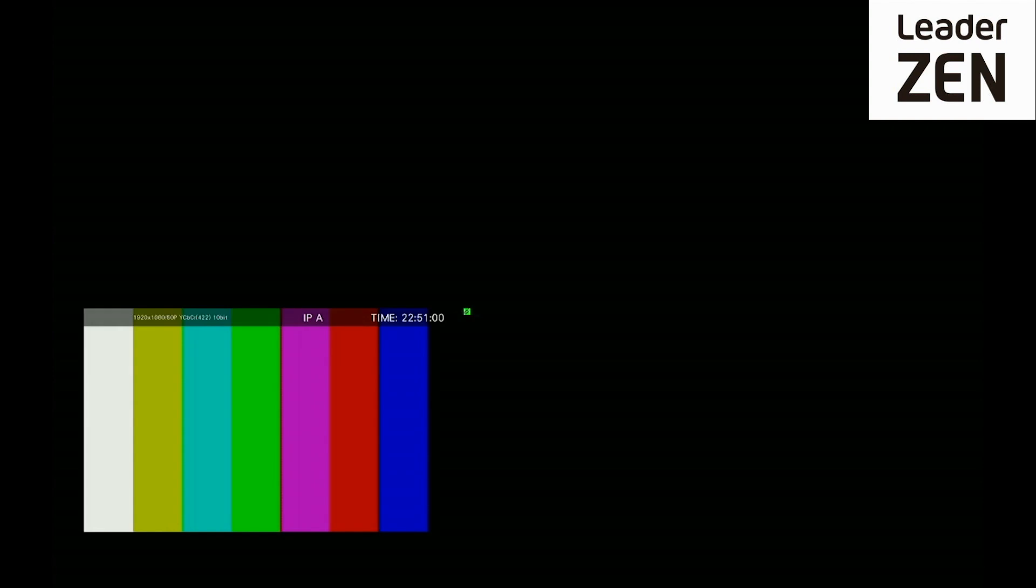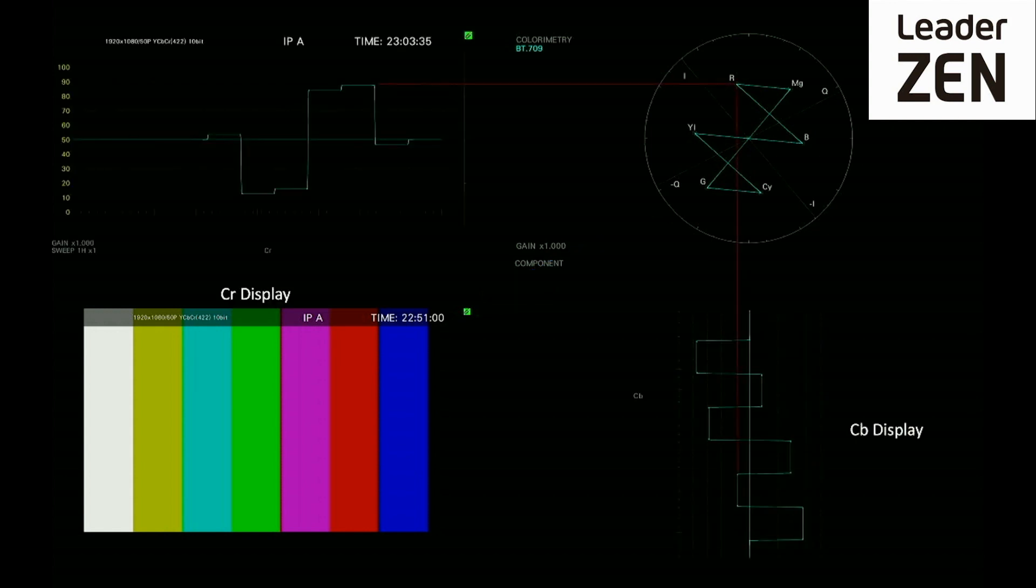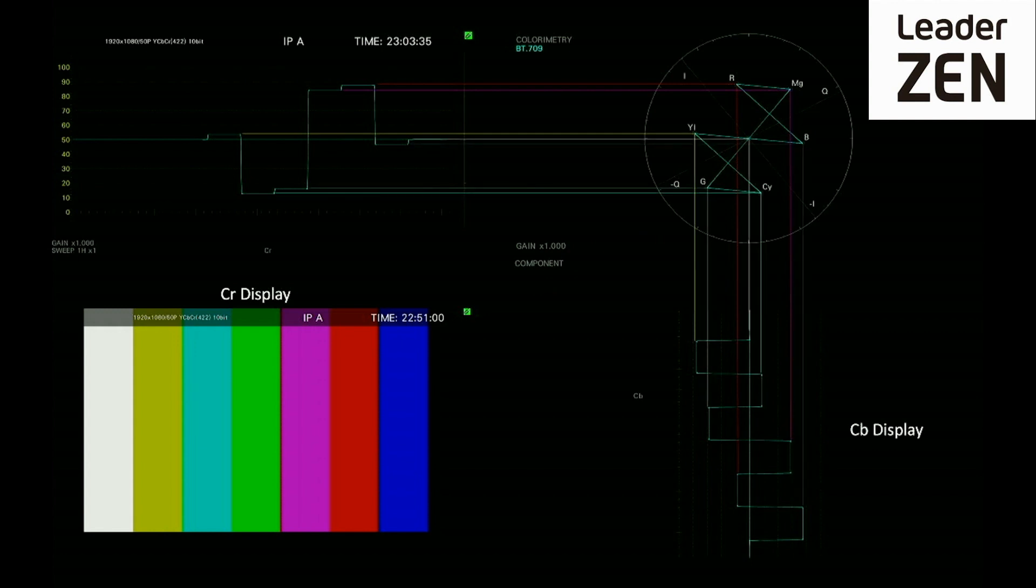So how does a picture translate into a vectorscope display? A 75% color bars test pattern translates into the following trace on the vectorscope display. As the vectorscope plots the CB and CR channels against each other, here you can see from the CB and CR waveform displays how they result in the vectorscope display.